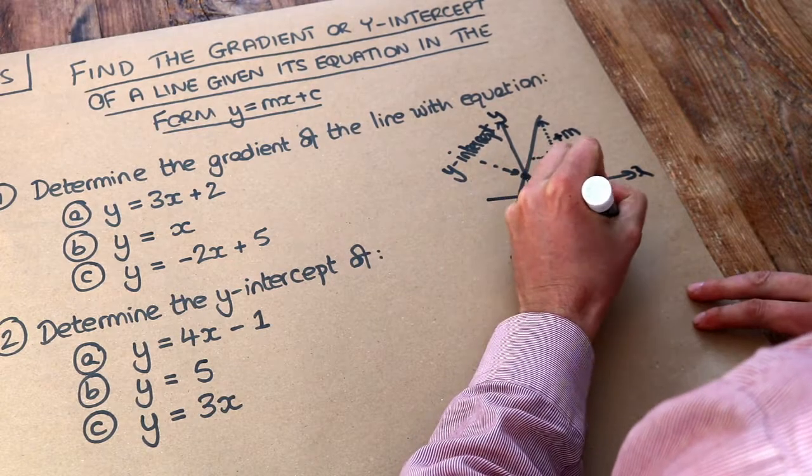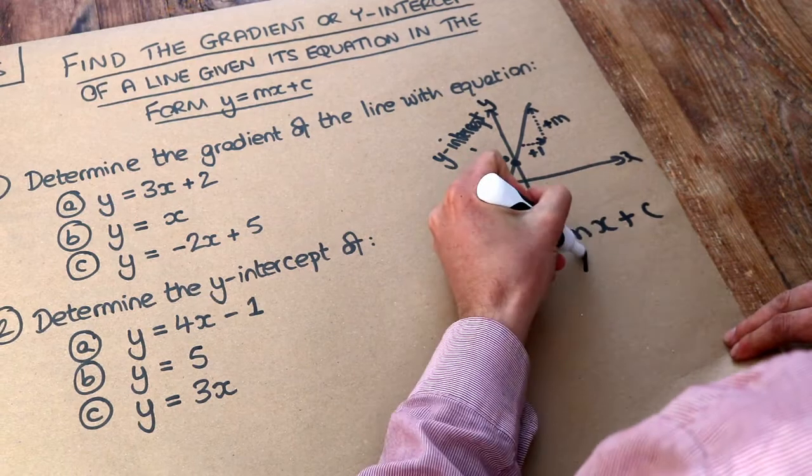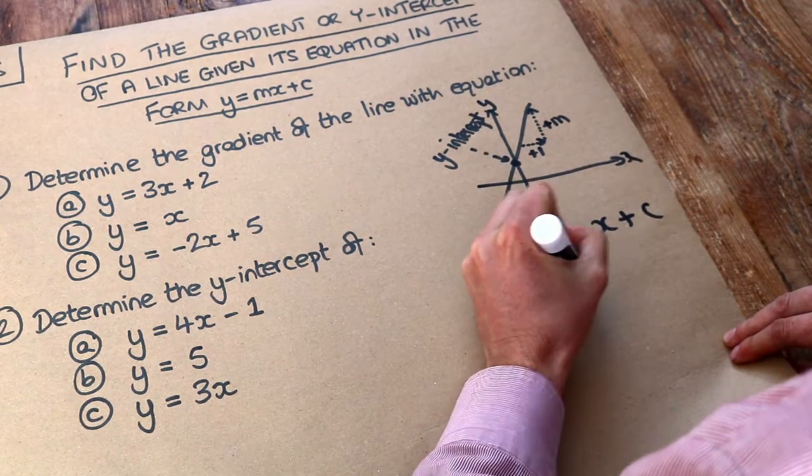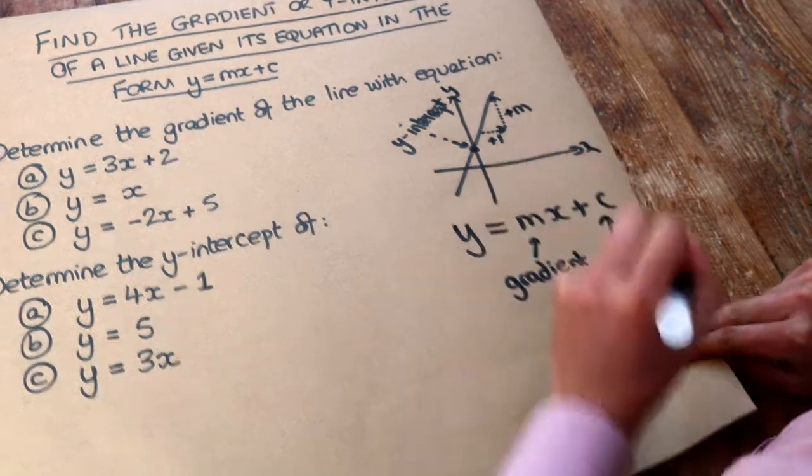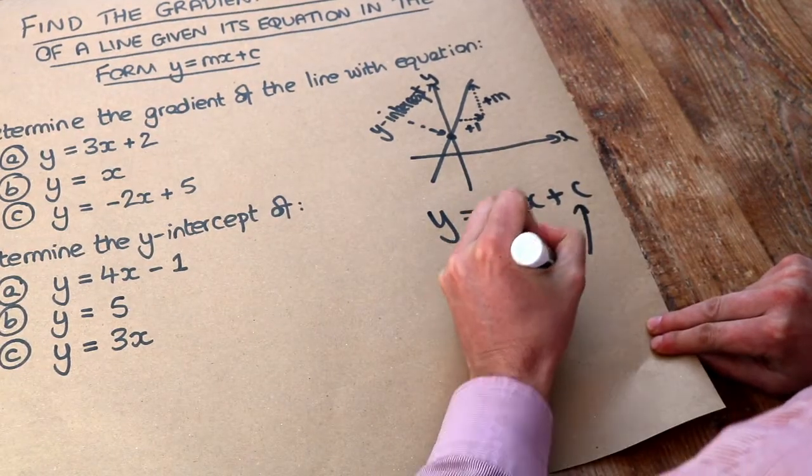So y equals mx plus c, where m is the gradient of the line and c is the y-intercept of the line.